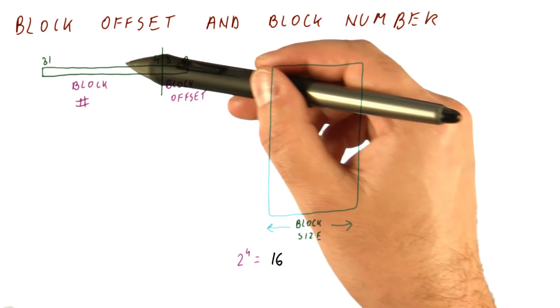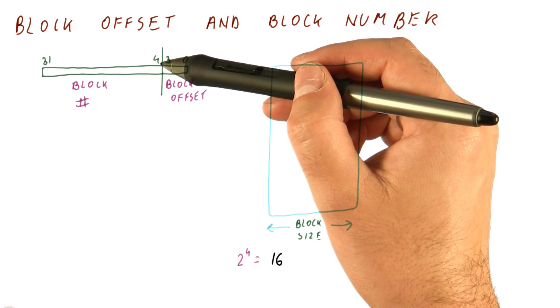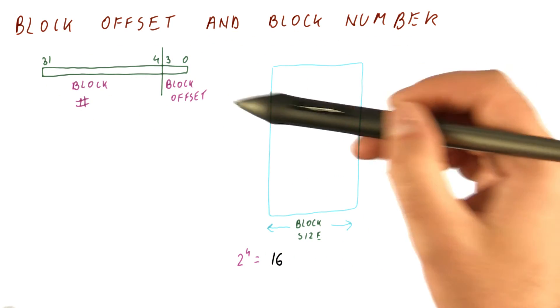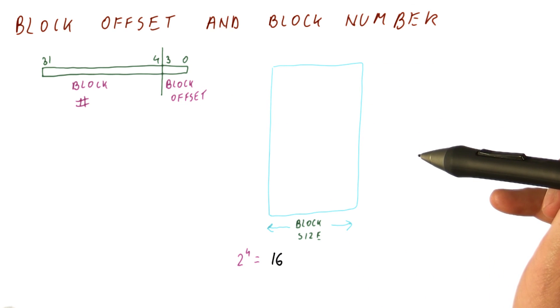So what we do is access the cache trying to find the block according to the block number. If we find the block, we use the block offset to get the right data from the block, because there is more than one location in the block.